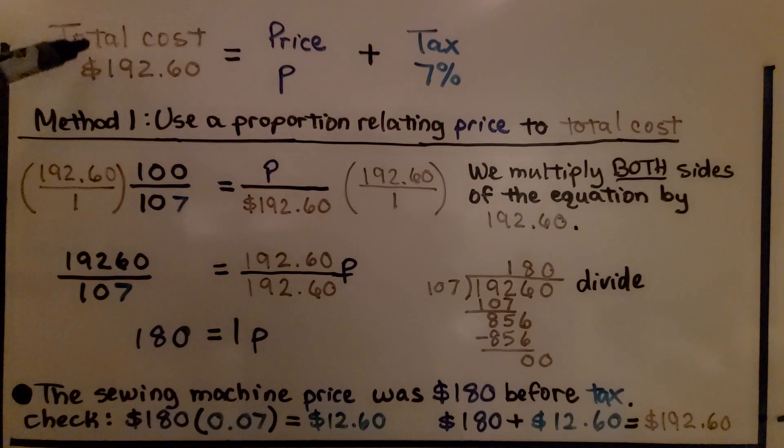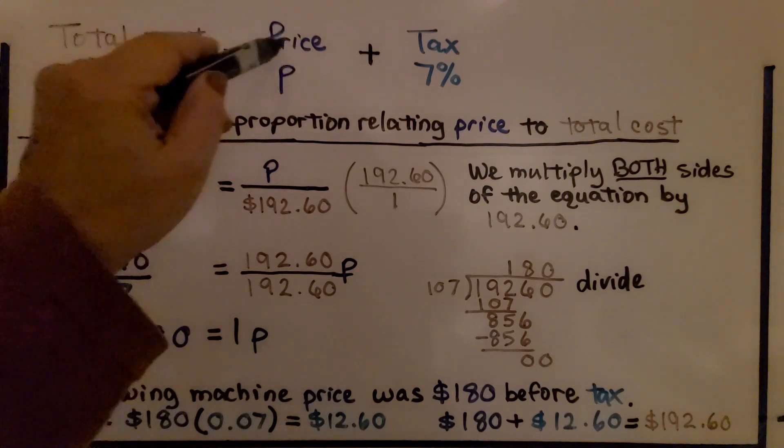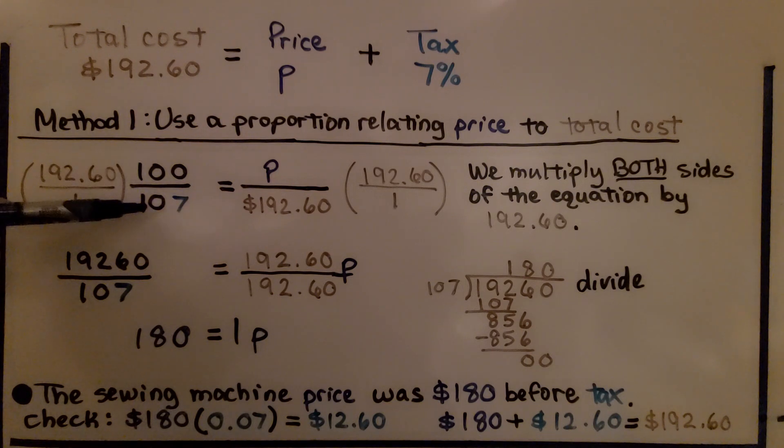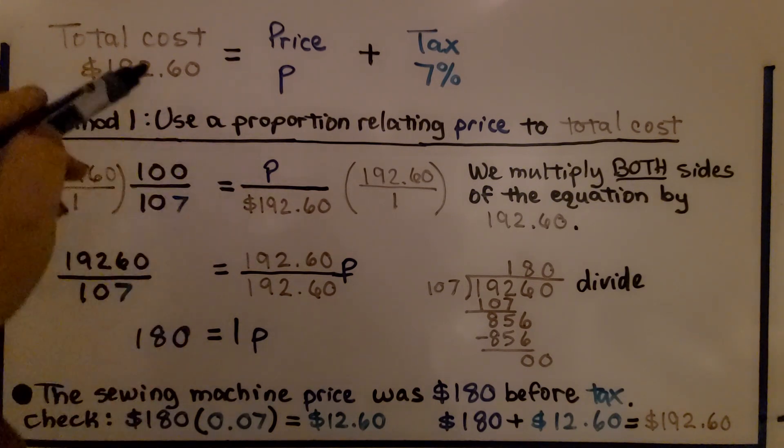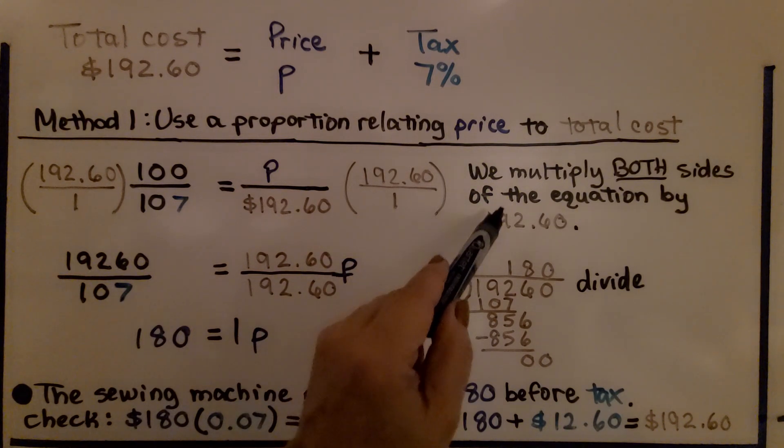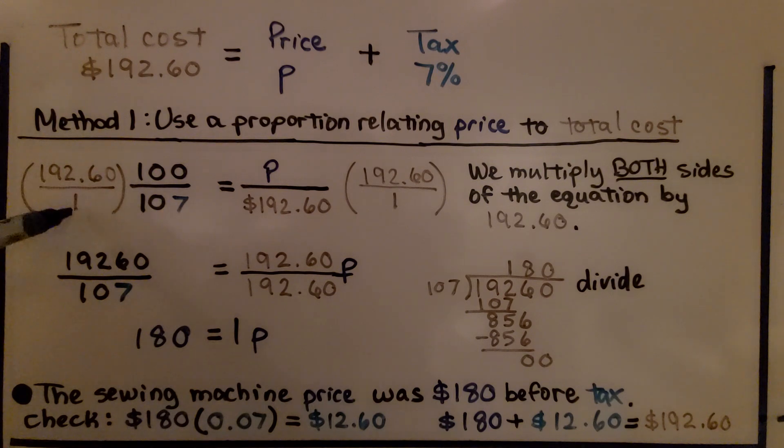So the total cost for the price of the sewing machine with tax was $192.60. P is going to be our price. Our tax is 7%. So this is method one, the first method using a proportion relating price to total cost. We have 100 divided by 107 because the price is 100% of the amount and the tax is 7% of this amount. So we have 100 divided by 107 is equal to P divided by that 192 and 60 cents. We multiply both sides of the equation by 192 and 60 cents. We can write them over a 1 to make our multiplication straight across easier.